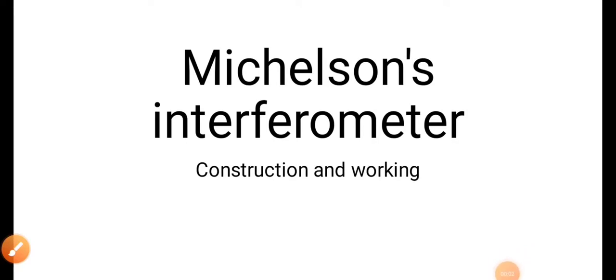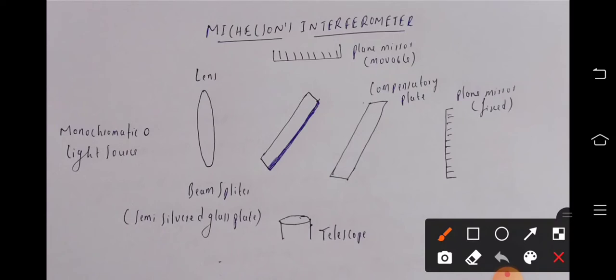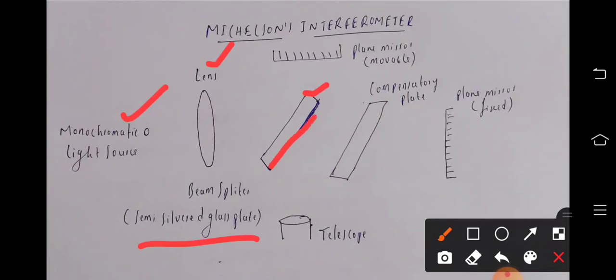In this video I am going to discuss the construction and working of Michelson's interferometer. The construction consists of a monochromatic light source, then next to it a lens is placed, then a beam splitter which is semi-silvered at the bottom of the glass plate, placed at an angle of 45 degrees.